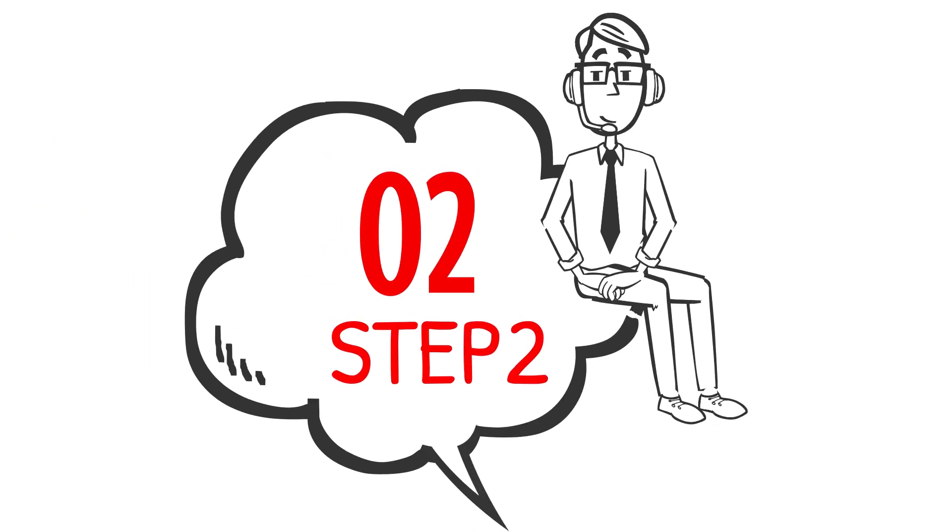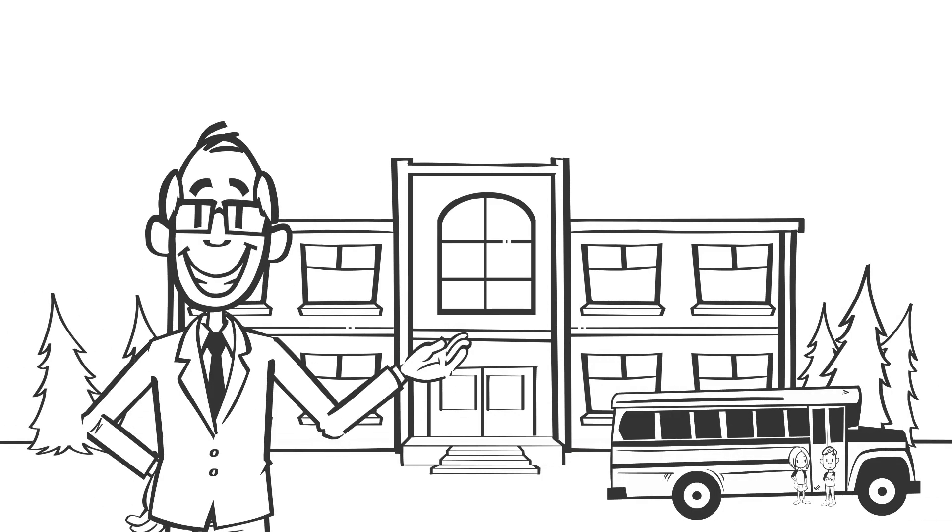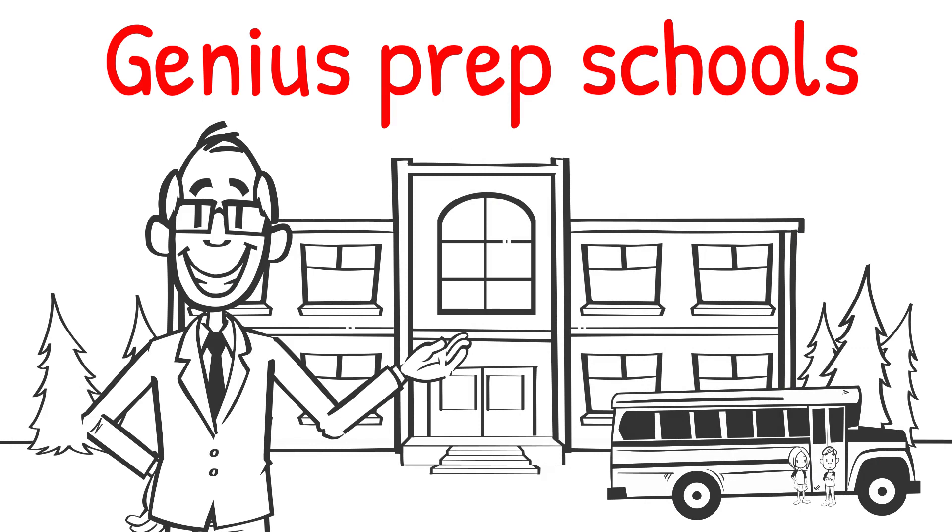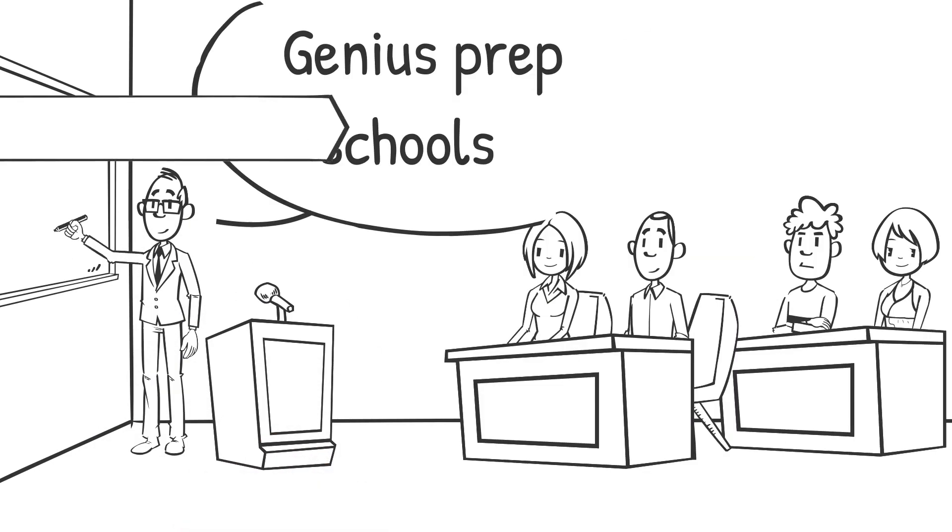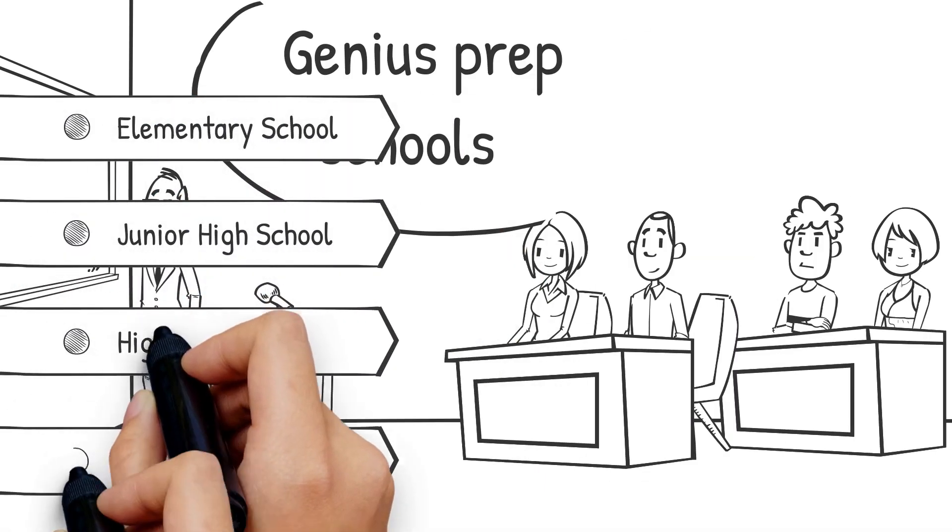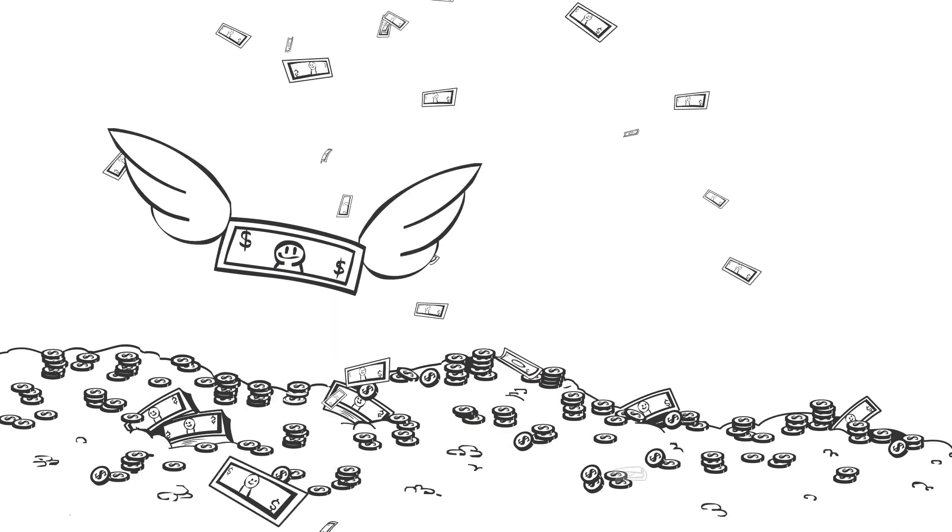And now, on to step two. Once our foundation's funds hit 50 billion yen, we will create or acquire pre-existing major prep schools to create Genius prep schools that create geniuses. We will bring up students to be at an extremely high level at the top of their classes for elementary school, junior high school, high school, and college entrance exams. Step two can be accomplished relatively easily as long as we have the necessary funds.